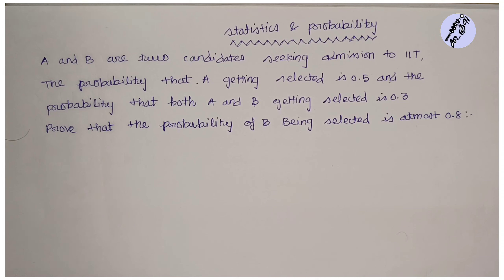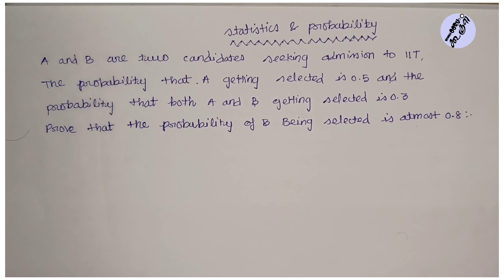A and B are IIT admission candidates. P(A) = 0.5, P(A∩B) = 0.3. We need to prove that the probability of B being selected is at most 0.8.